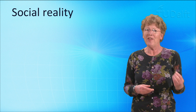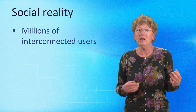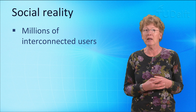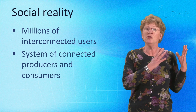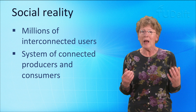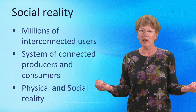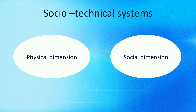However, the technological or physical dimension is only part of the story of infrastructure. A social scientist studying infrastructure will see a social system in which millions of users are interconnected. He will also see a system that connects the producers with the users of a specific service. And what the social scientist sees is as relevant as what the engineering scientist sees. So, infrastructures have a physical and social dimension. And even if, for the sake of scientific analysis, we tend to separate the two dimensions, they cannot be separated in practice. For example, car owners are not likely to switch to electric vehicles if they cost much more than a conventional vehicle.